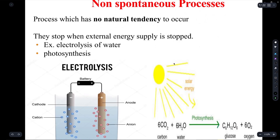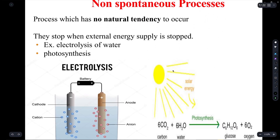For non-spontaneous processes, it can be anything that requires an addition of energy throughout the entire process, such as the electrolysis of water, which requires constant electric energy to occur, and the process of photosynthesis, which requires constant solar energy to occur. Non-spontaneous processes are characterized by the fact that if the energy source is removed, the entire reaction will stop.